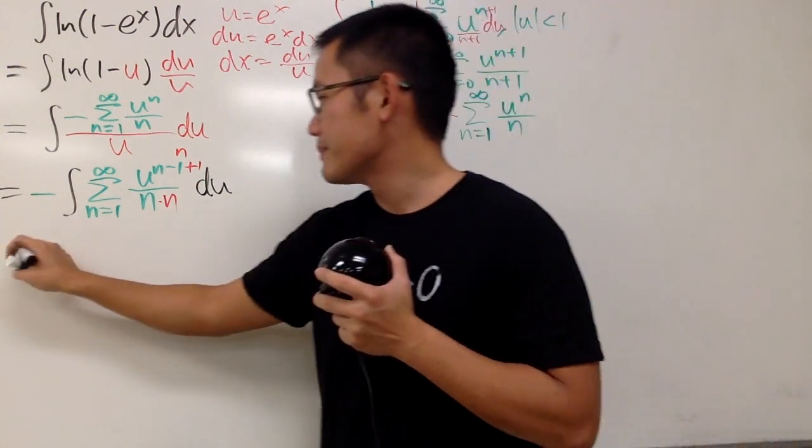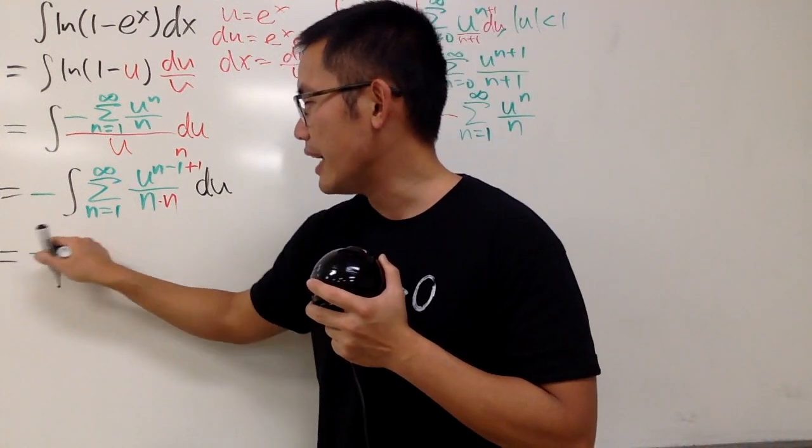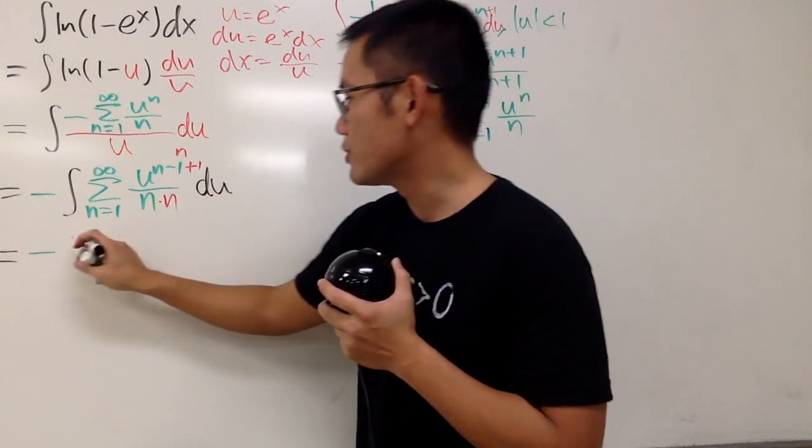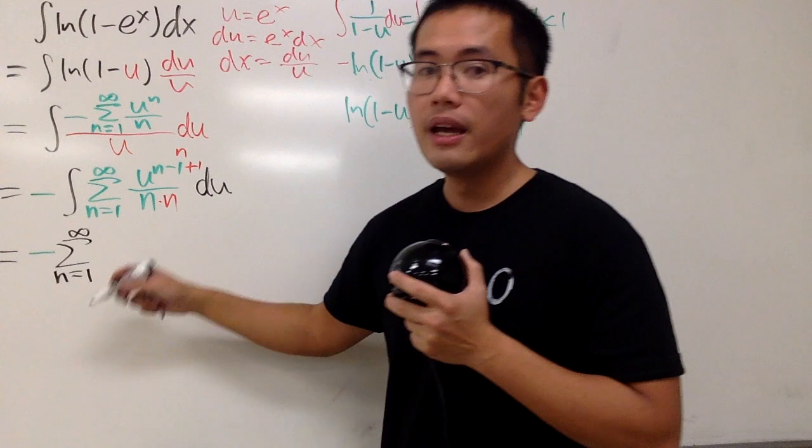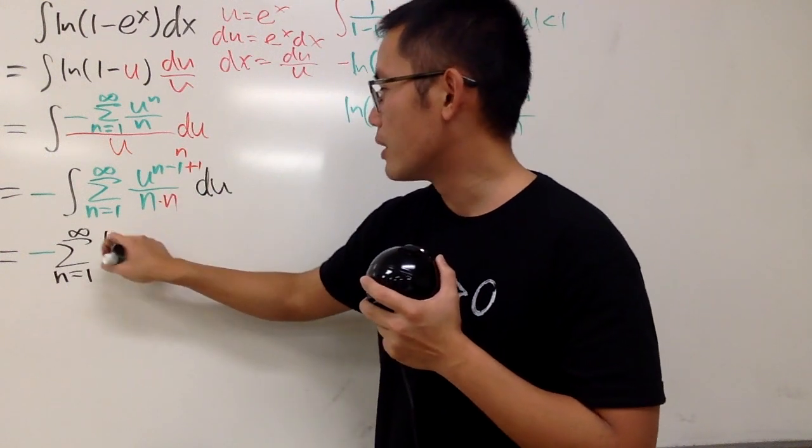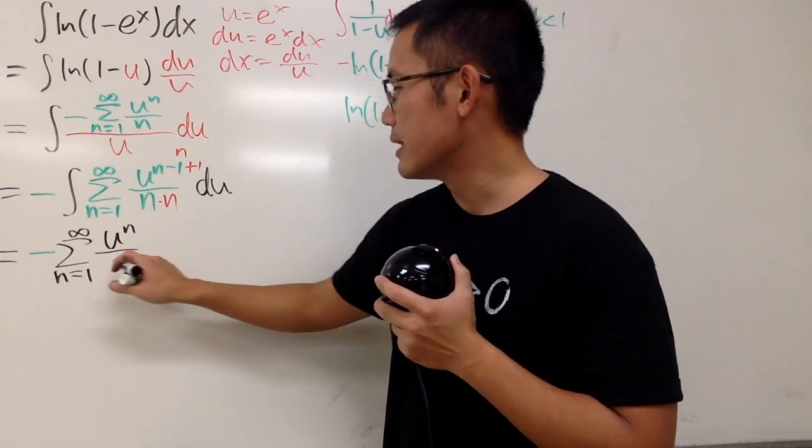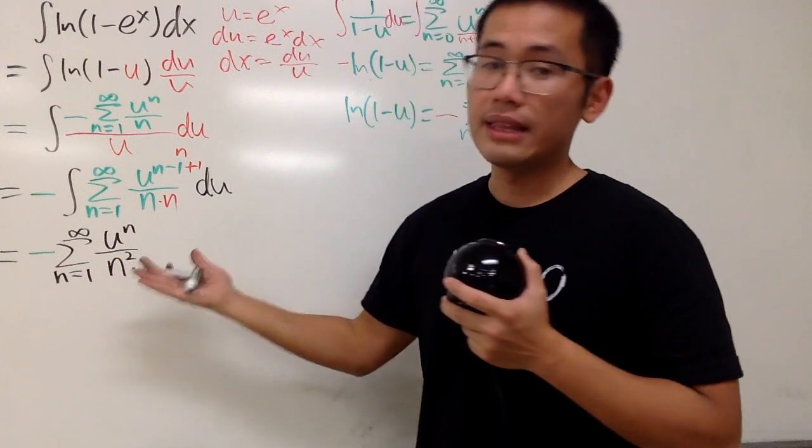And we see that this right here gives us negative. And we have the summation right here, of course. n goes from 1 to infinity. And we have u to the nth power over n times n is, of course, n squared.